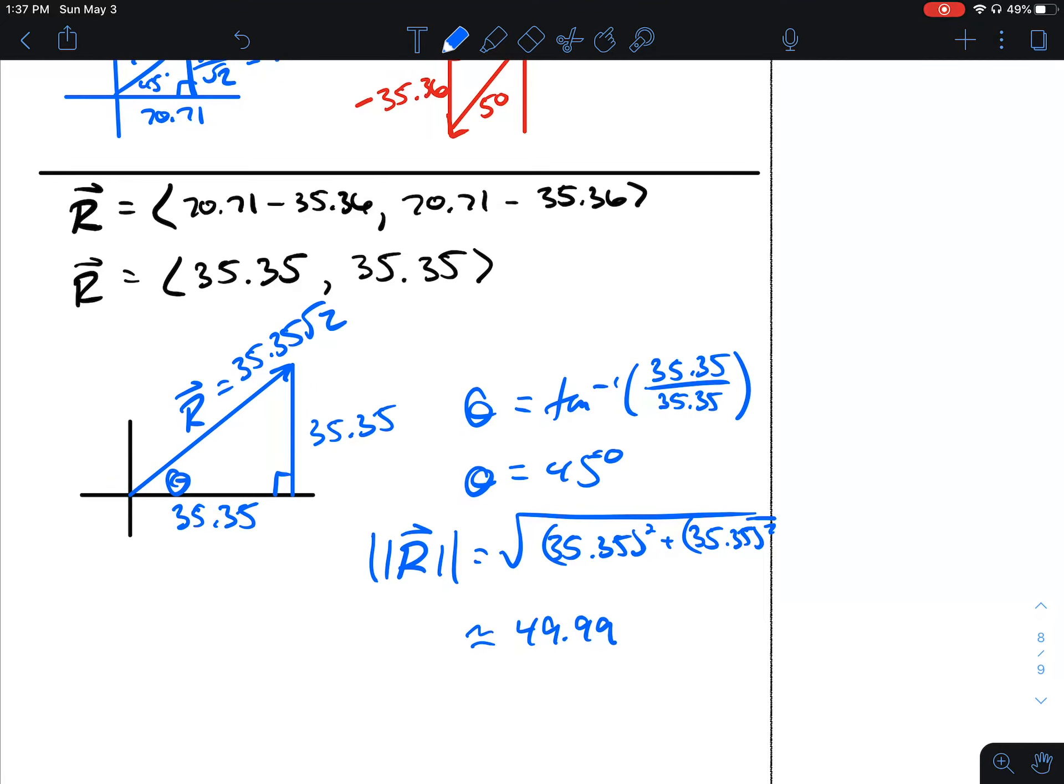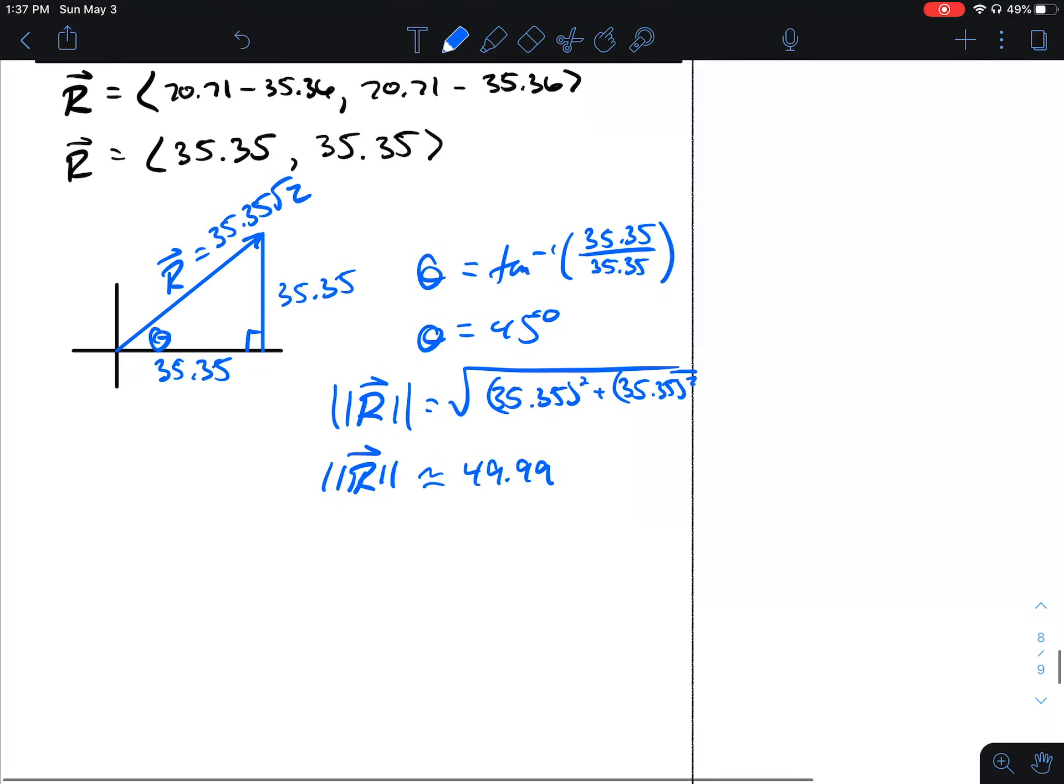Had we not made some rounding errors, this would end up being exactly 50. The resultant vector is 49.99 at 45 degrees.